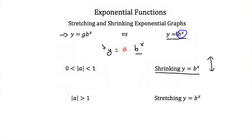Now if our a value is greater than 1, or the absolute value of our a is greater than 1, then we're multiplying our b to the x value for every x value by some number greater than 1, which means our y value is going to get larger. So when the absolute value of our a is greater than 1, we're going to stretch the graph of y is equal to b to the x vertically.